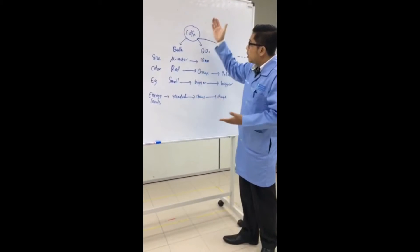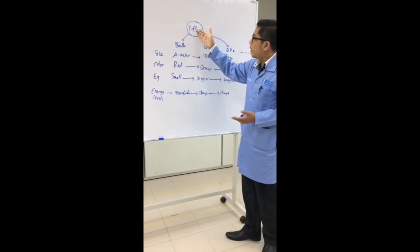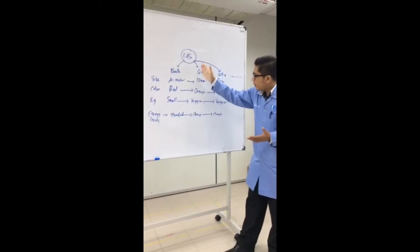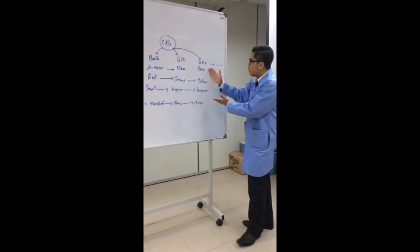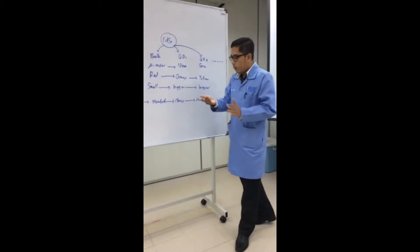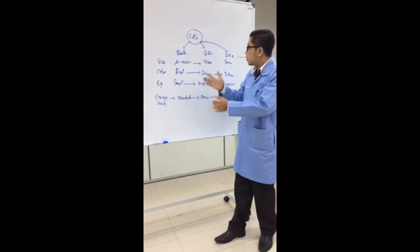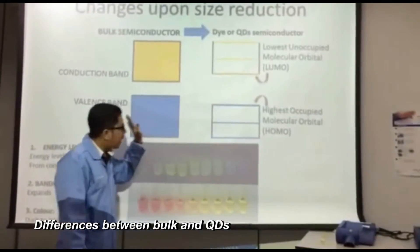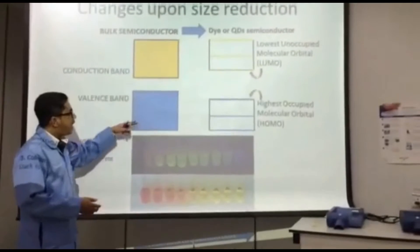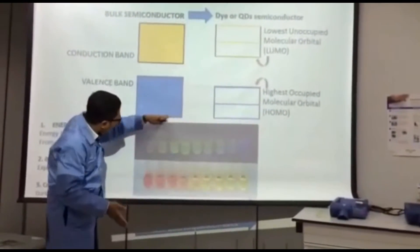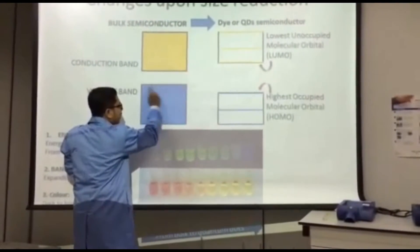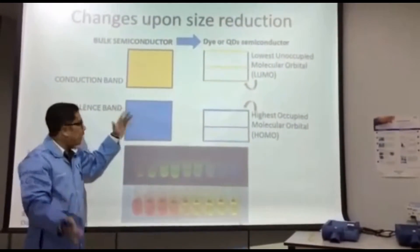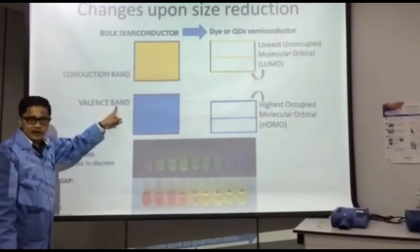These are the things that change using the same material. In bulk phase, these are the properties. When reduced to quantum dot 1 at 10 nanometers, the properties change. In bulk, the energy levels are very closely separated from each other — so many levels, up to three thousand, that we cannot differentiate them. So we call them bands, not energy levels.